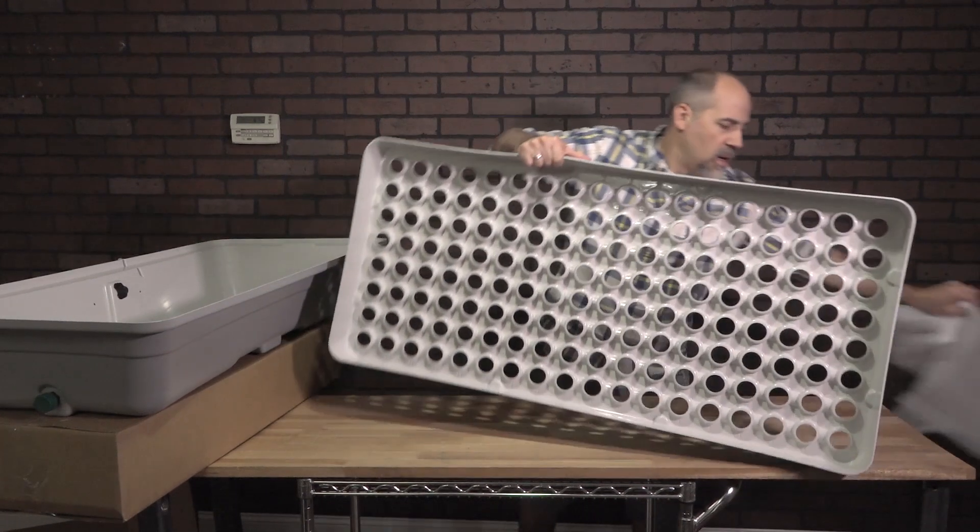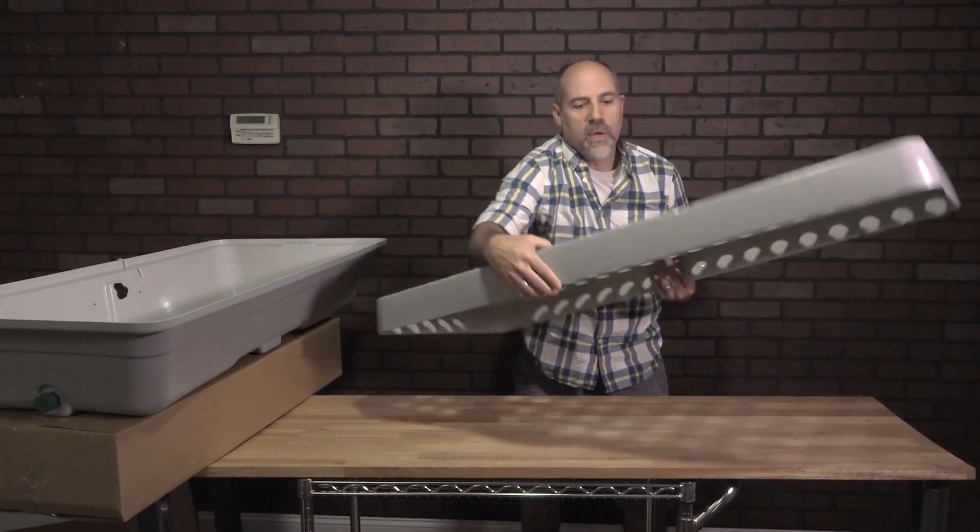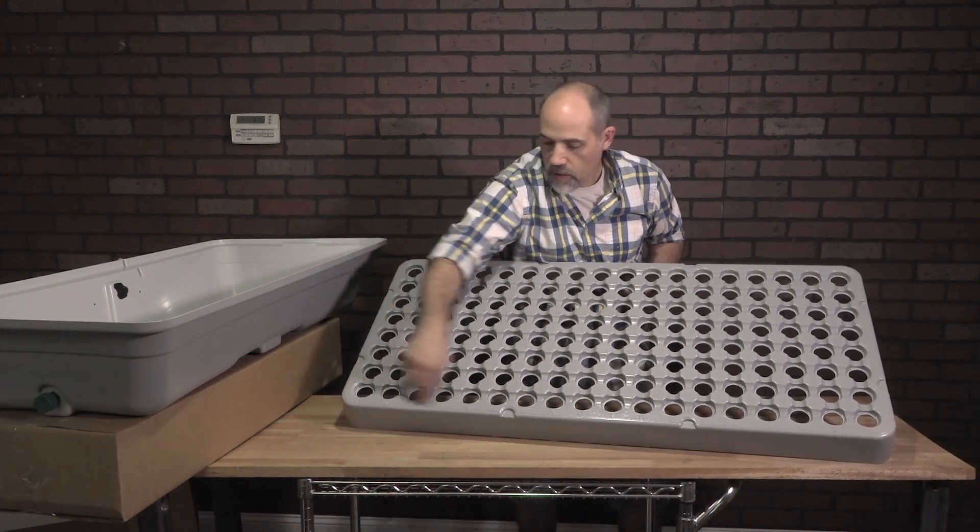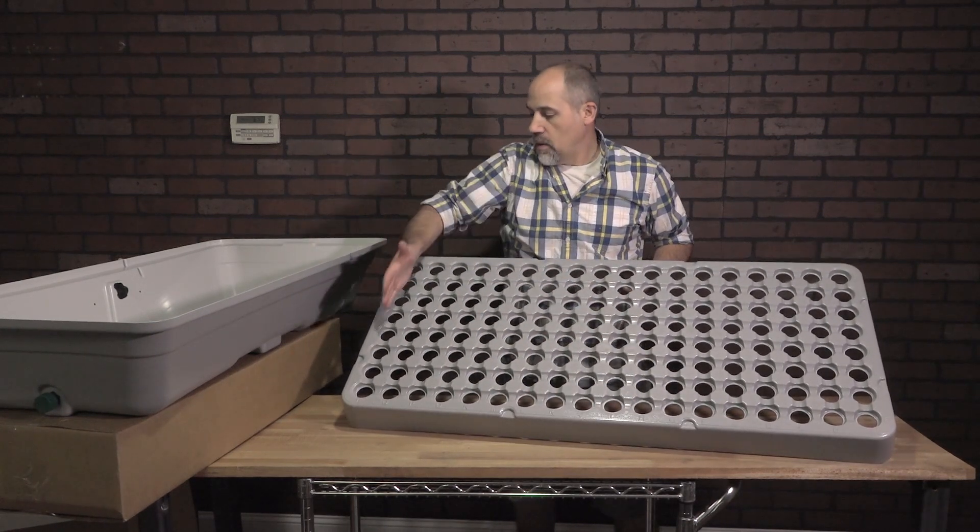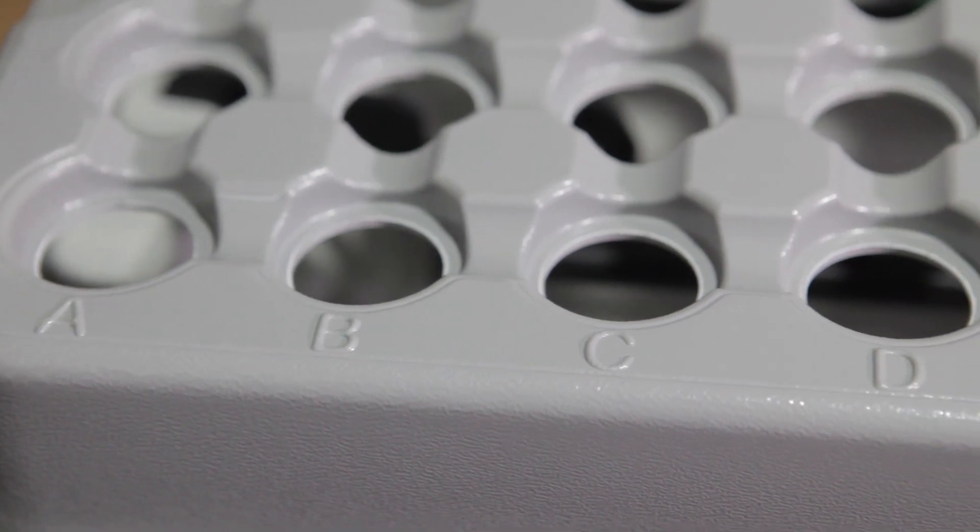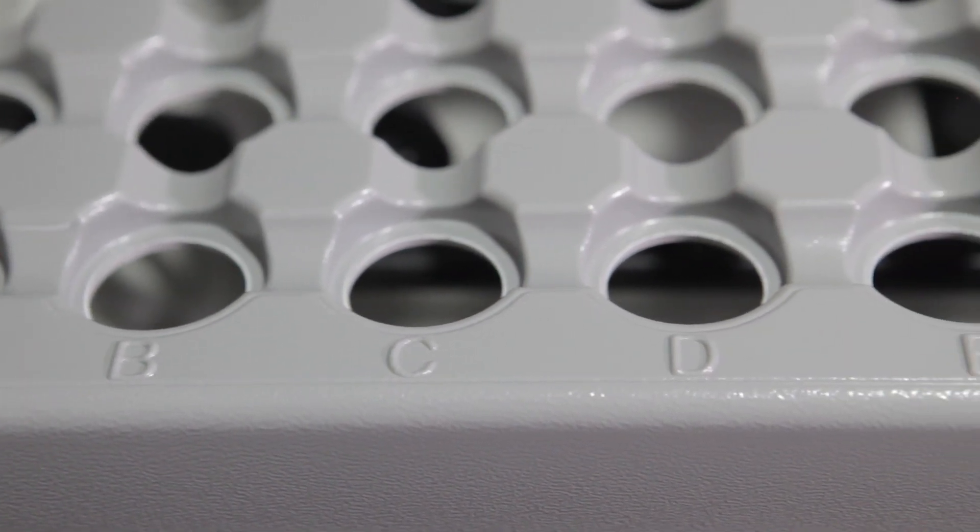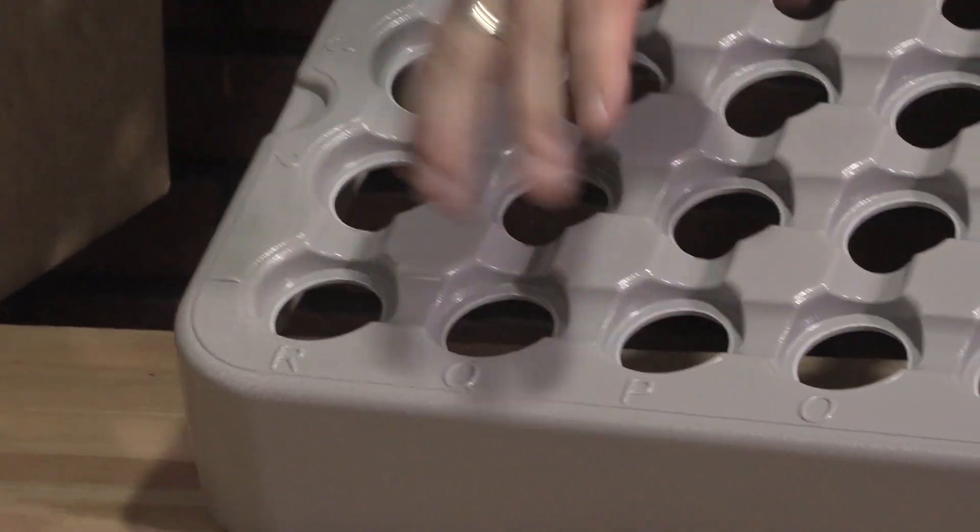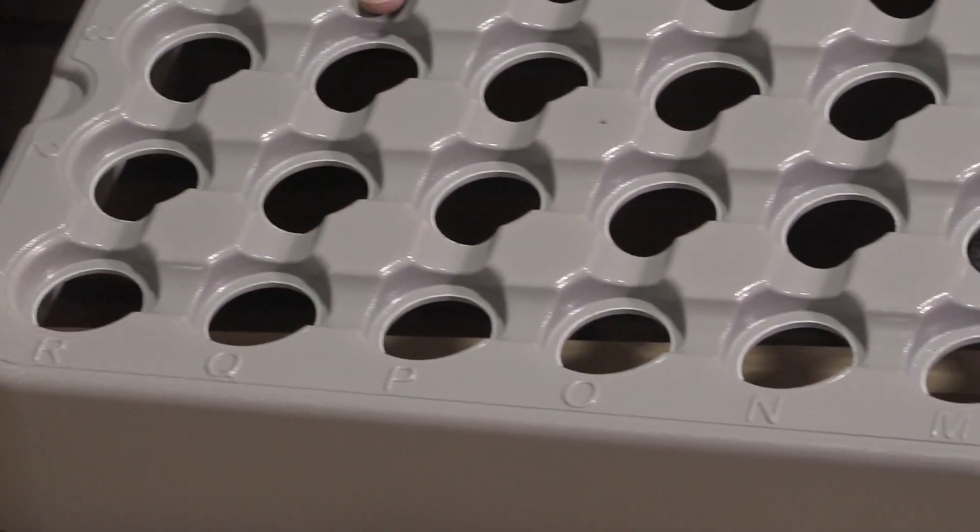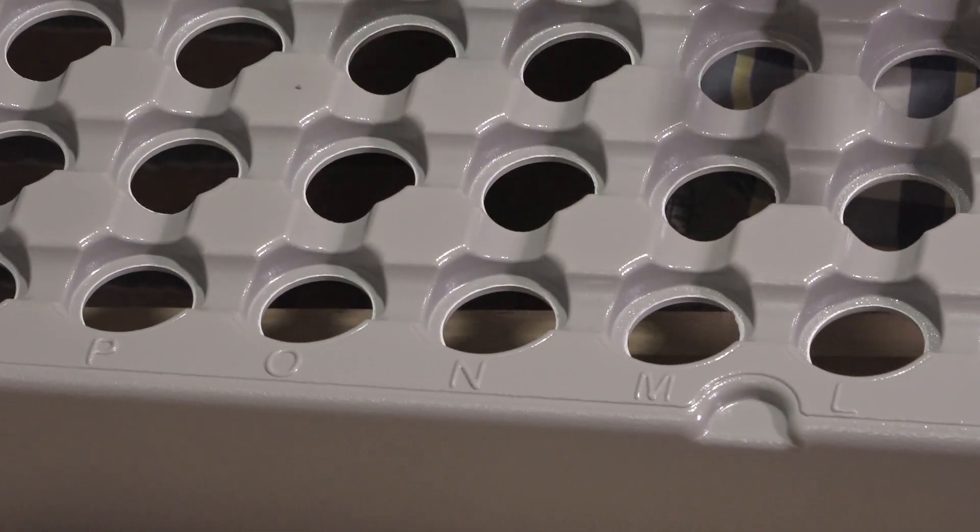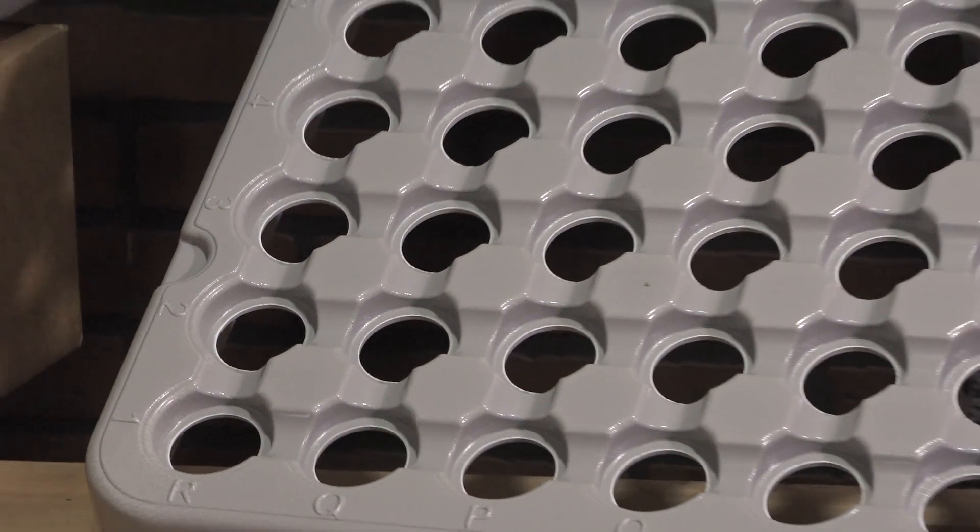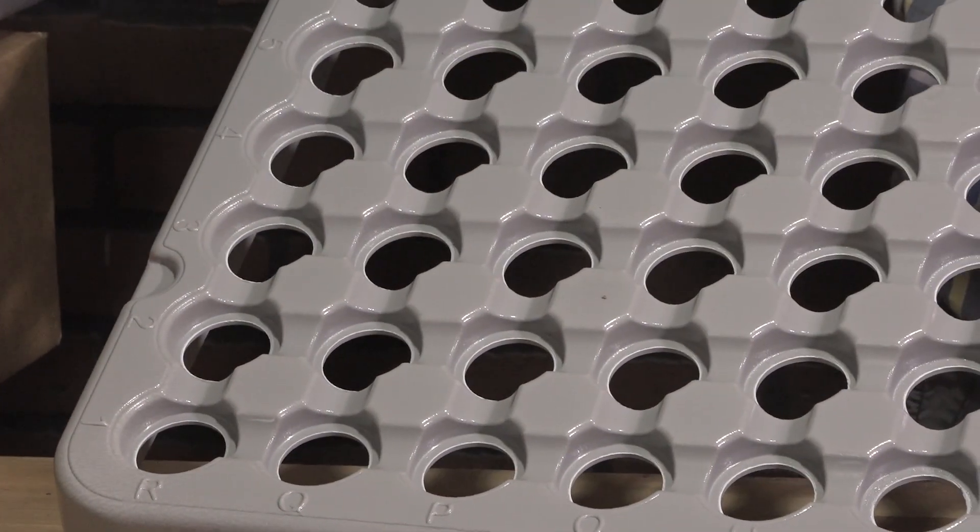And here's our lid. Love this new feature on the lid. You've got an alphanumeric lid. So now you can categorize your plant species based on the rows here. R through P, I know that those are such and such plant strain. And then you can go forward and keep track of all your different plants that you'll have in the system at one time using this grid method.